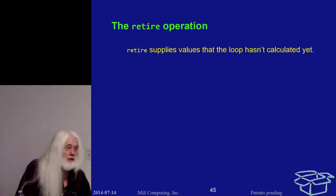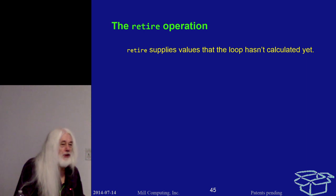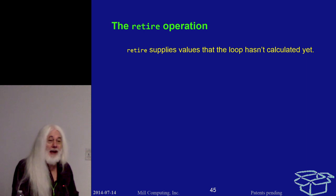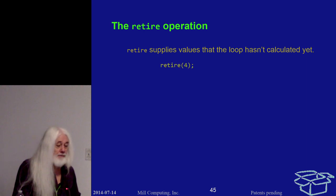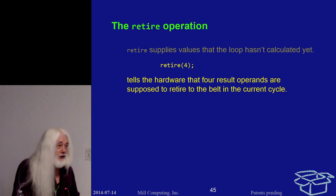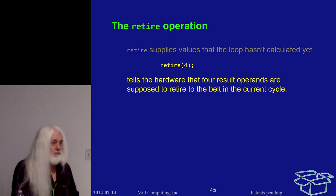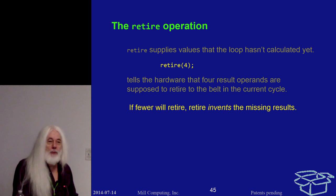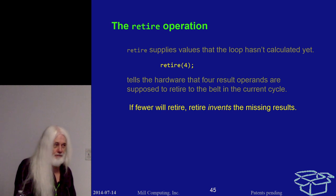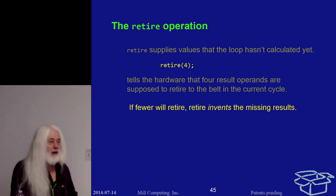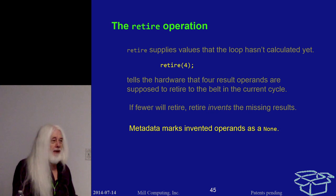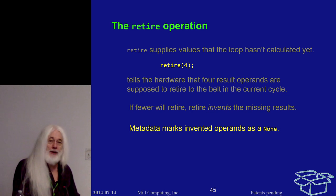So the Mill has a way of handling that. Let me introduce the retire operation. The retire operation's function is to supply values that the loop has not yet calculated — those which would have been calculated in the prologue but have not yet been. If I say 'retire 4,' it tells the hardware that four result operations are exposed to retire in this cycle. If fewer actually retire, the retire operation invents results to retire. These are not meaningful, but they do have belt impact.